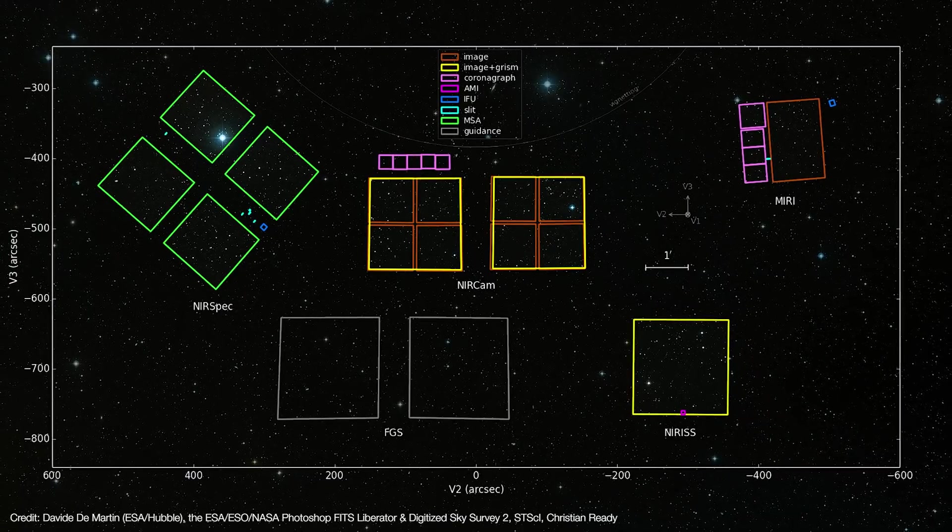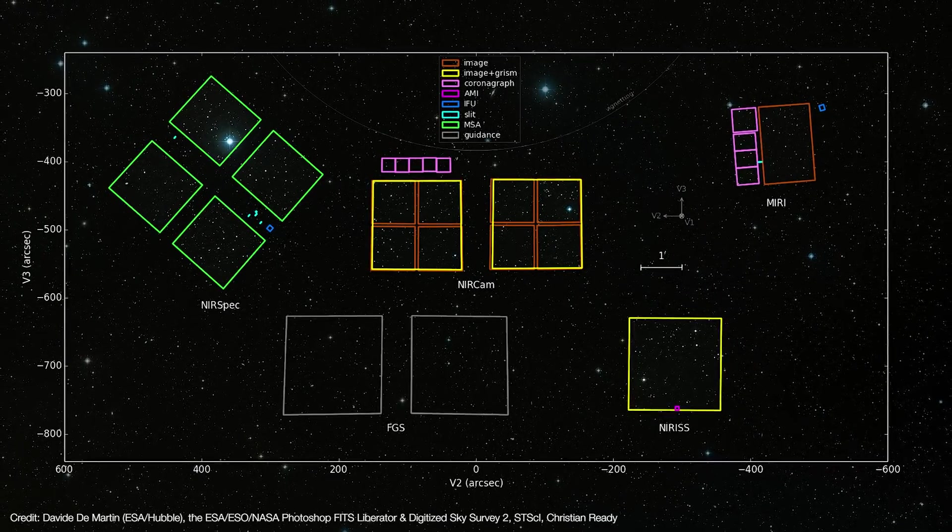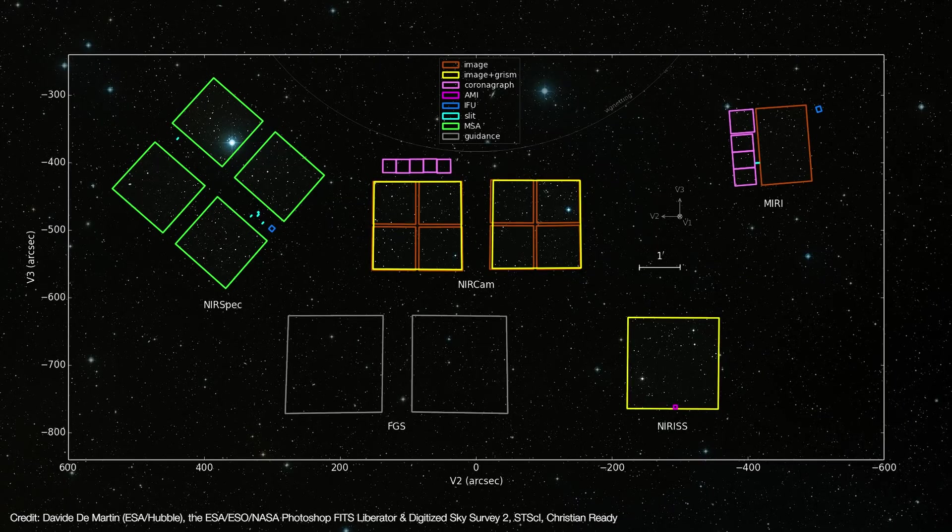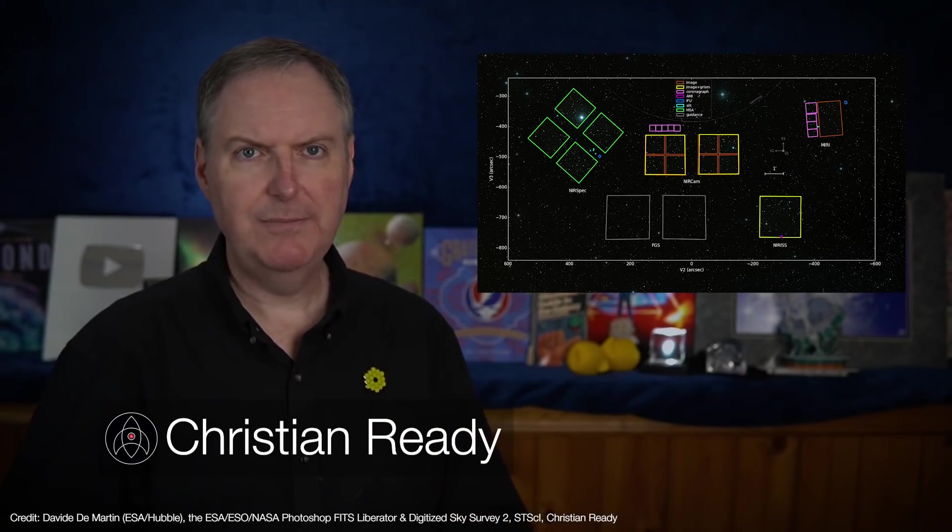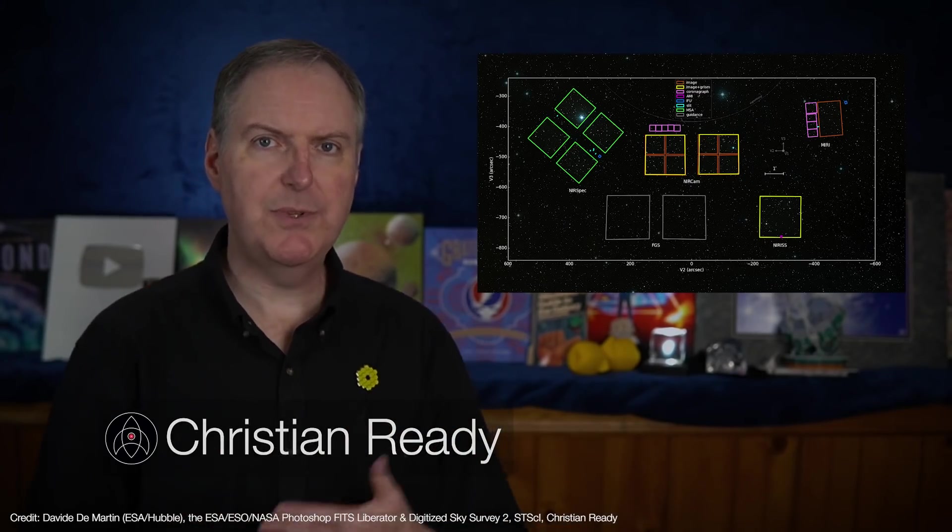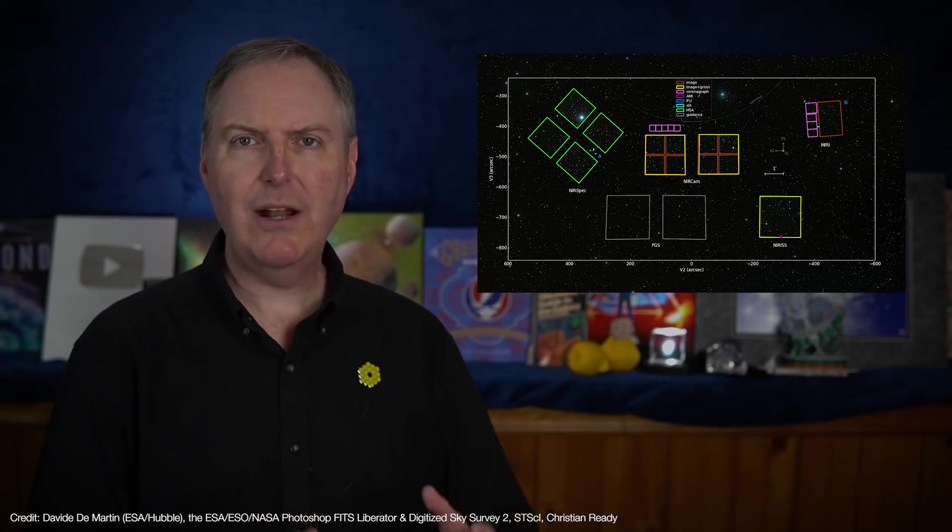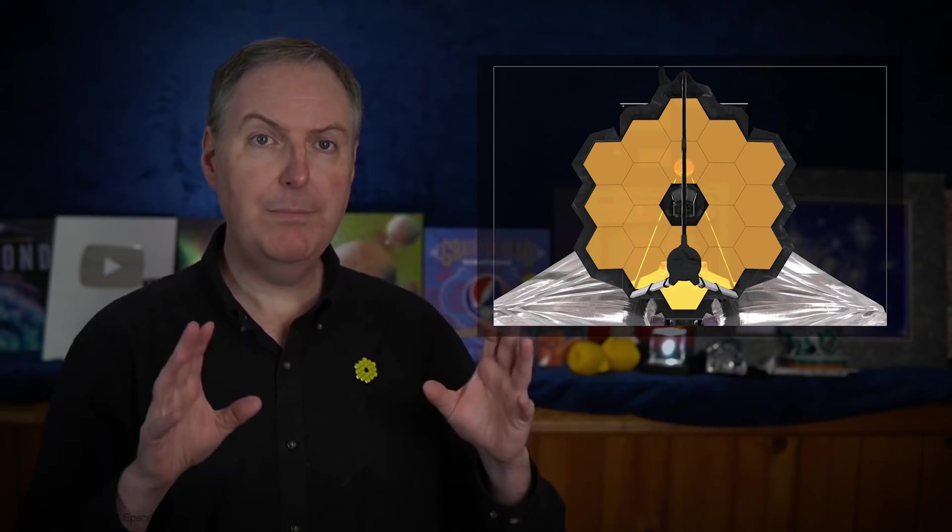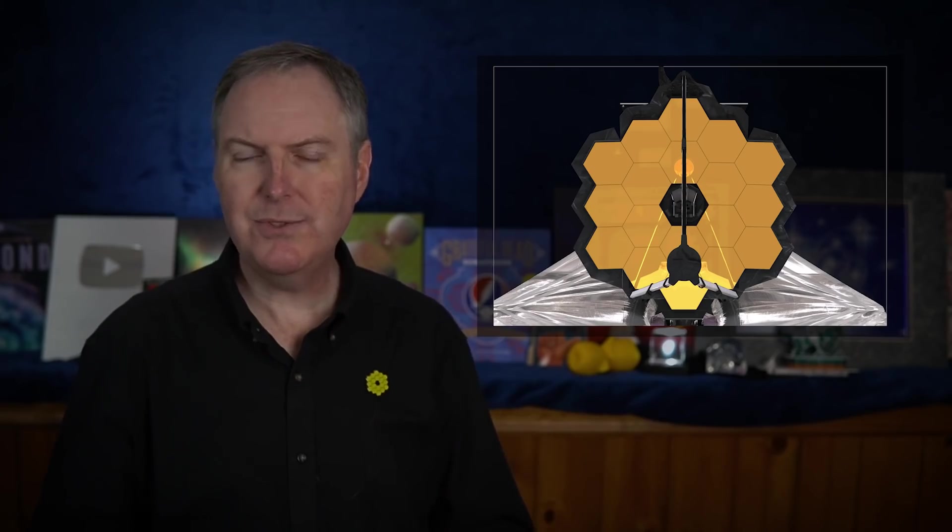The instruments view a portion of Webb's science field of view. This is the part of Webb's total field of view that's optimized for maximum image quality and avoids as much of the stray light as possible. What's important to keep in mind is that all 18 of Webb's mirror segments are contributing to the science field. It's not like any of Webb's mirrors are going unused or anything.